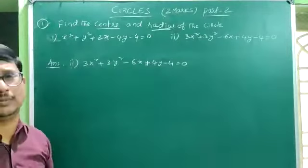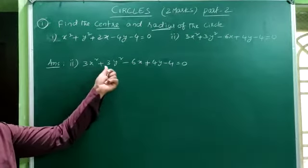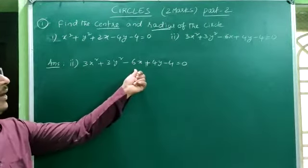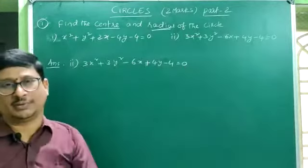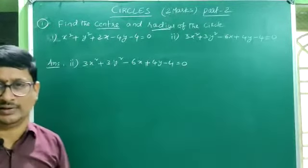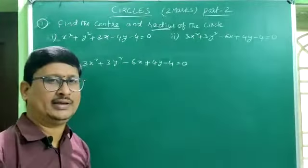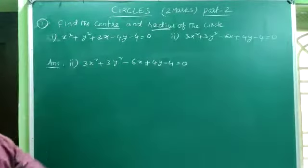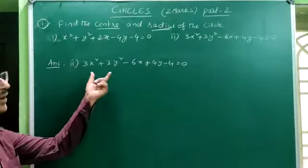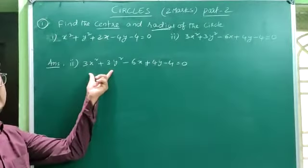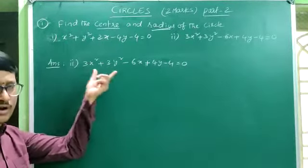Let's see the second problem: 3x² + 3y² − 6x + 4y − 4 = 0. We have to find the center and radius of this circle. First, we have to check whether the given equation is in the general form or not.